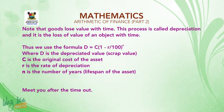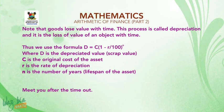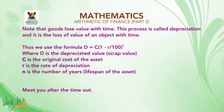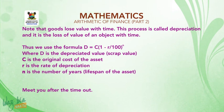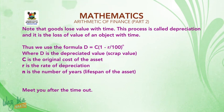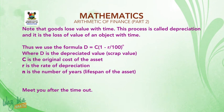Thus, we use the formula: D = C(1 − r/100)^N, where D is the depreciation (scrap) value, C is the original cost of the asset, R is the rate of depreciation, and N is the number of years — the lifespan of the asset.